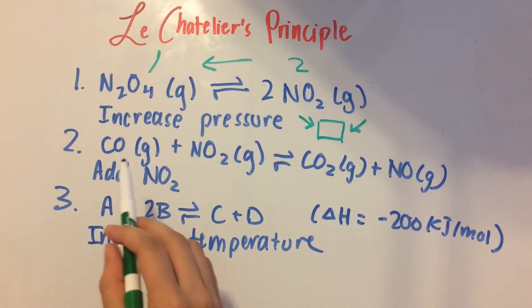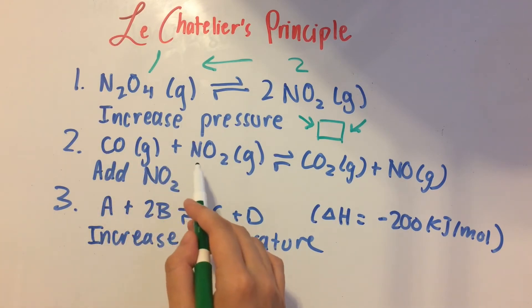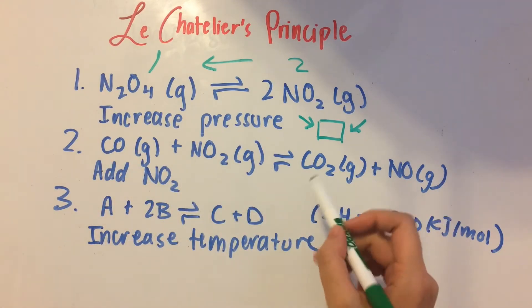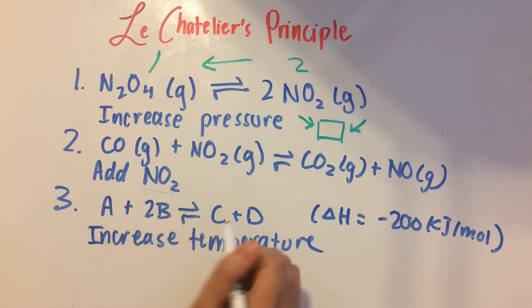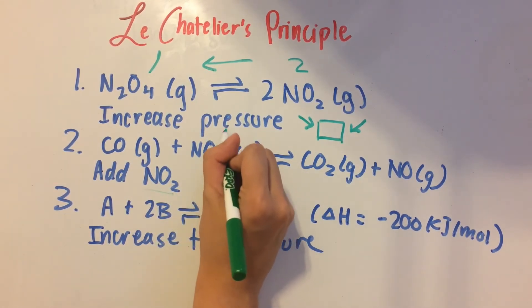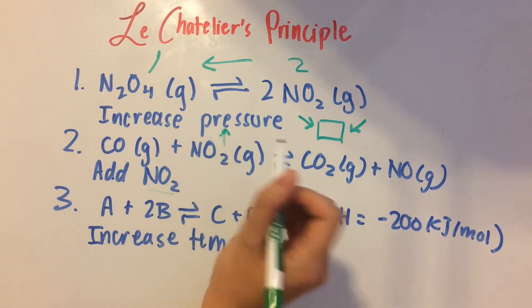Okay, so next one. We have CO and NO2 in dynamic equilibrium with CO2 and NO. And what we're going to do is add some NO2. So we're going to increase the concentration of NO2.